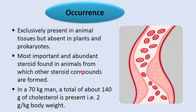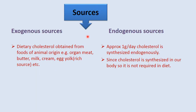Cholesterol occurs exclusively in animal tissue; plant cells and prokaryotes do not have it. It is an important and abundant steroid, and many steroids are synthesized from cholesterol. In a 70 kg man, a total of 140 grams of cholesterol is present. Sources are exogenous, obtained from food of animal origin, and endogenous, synthesized within the body.